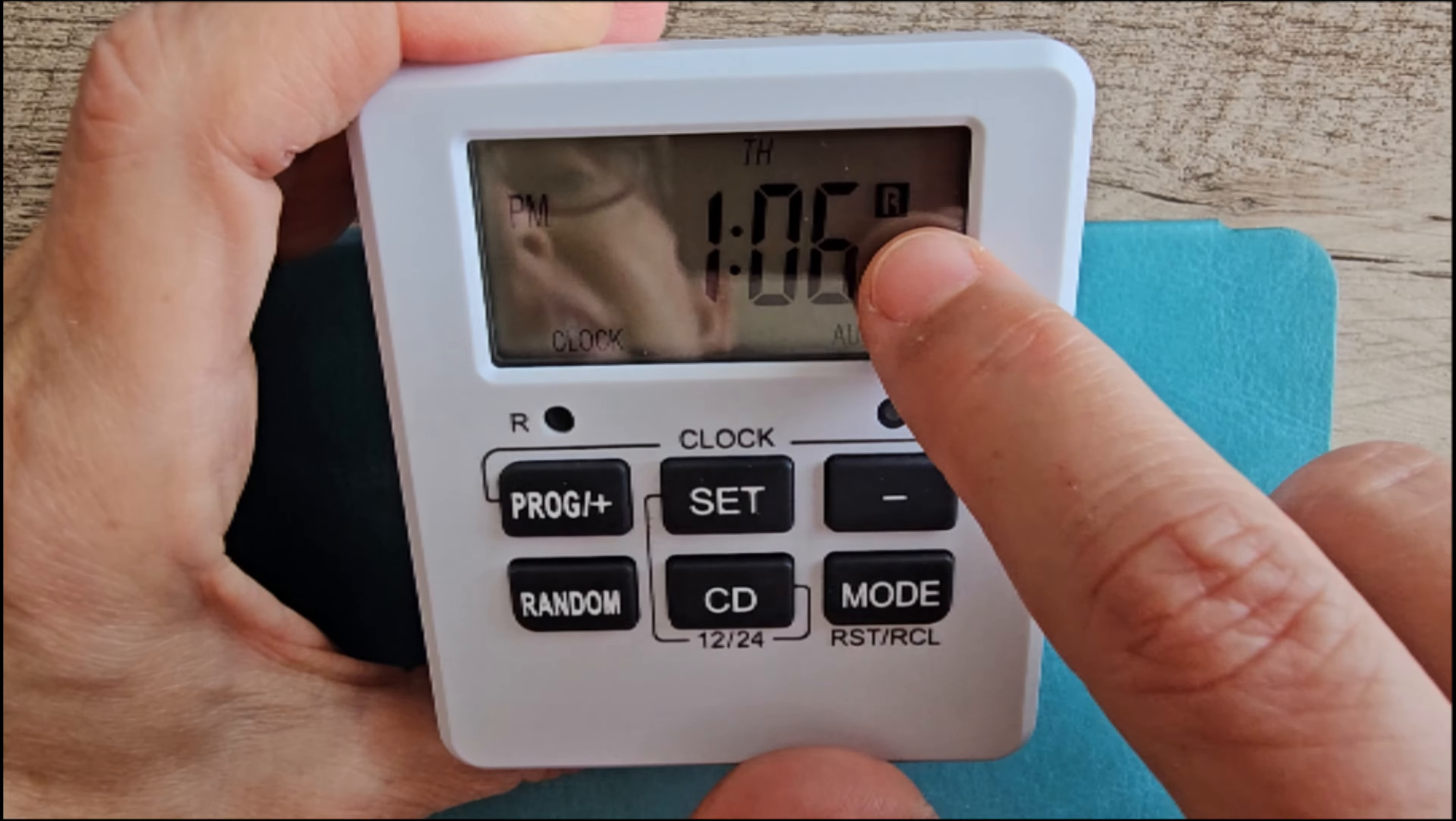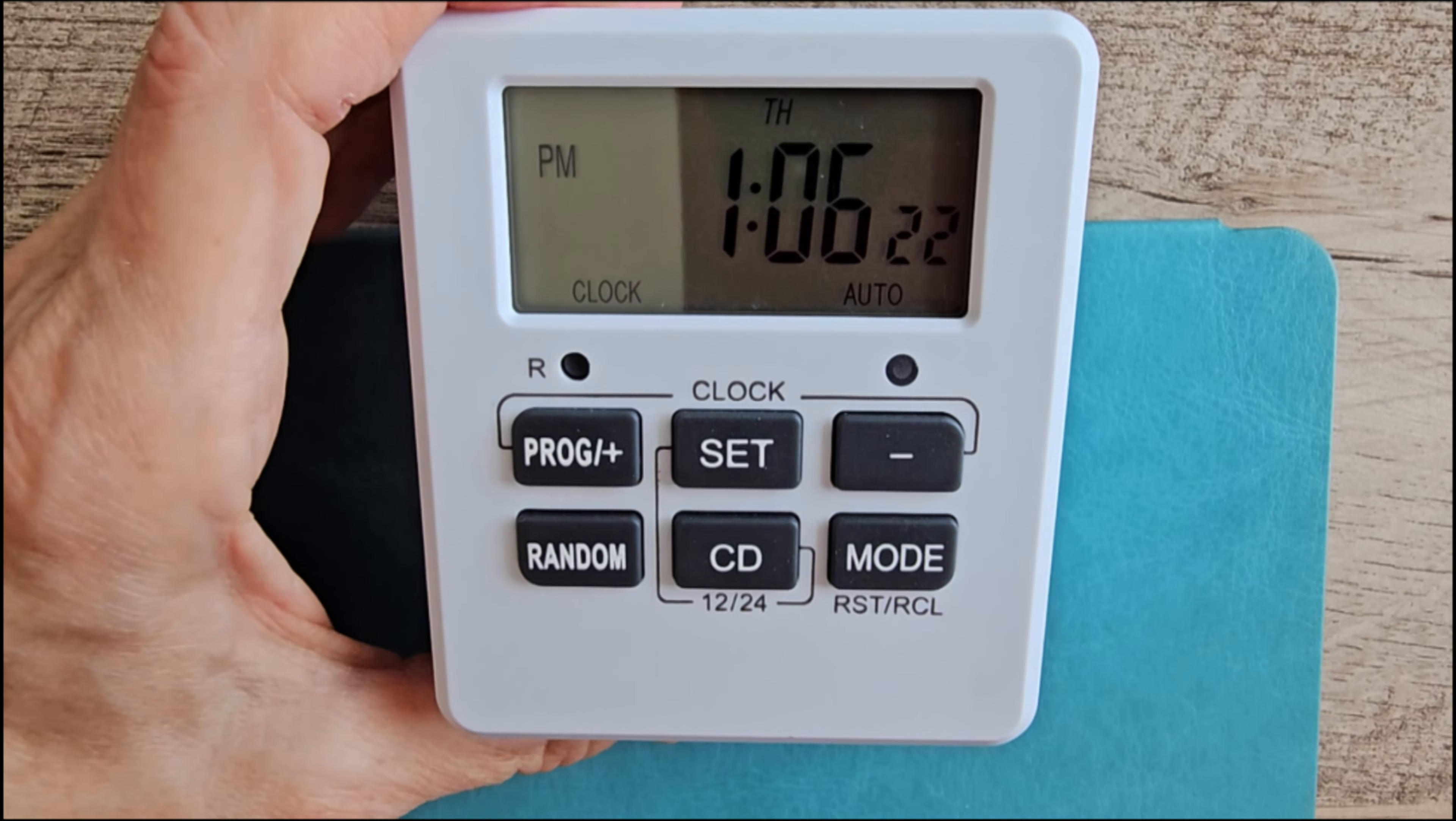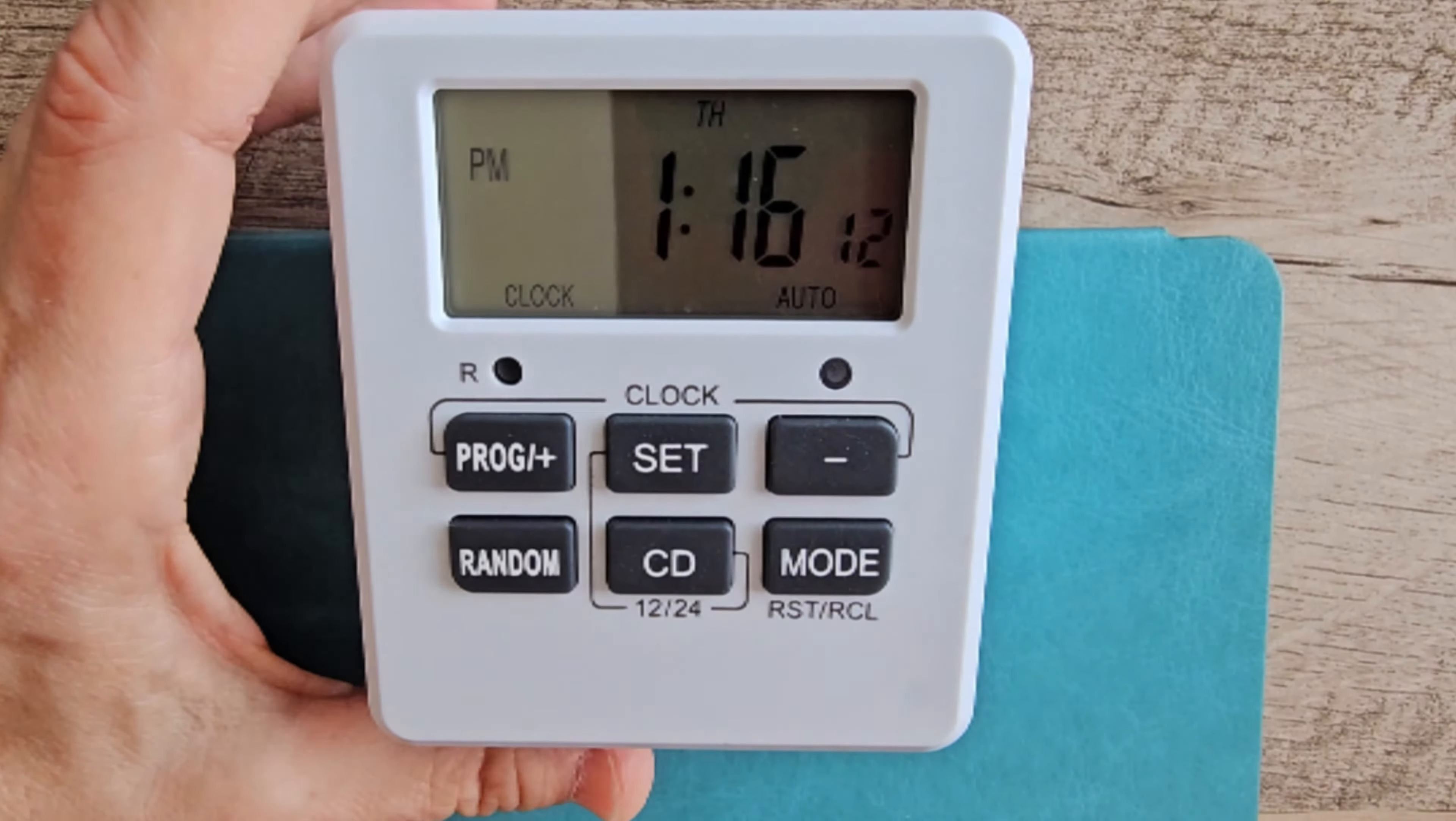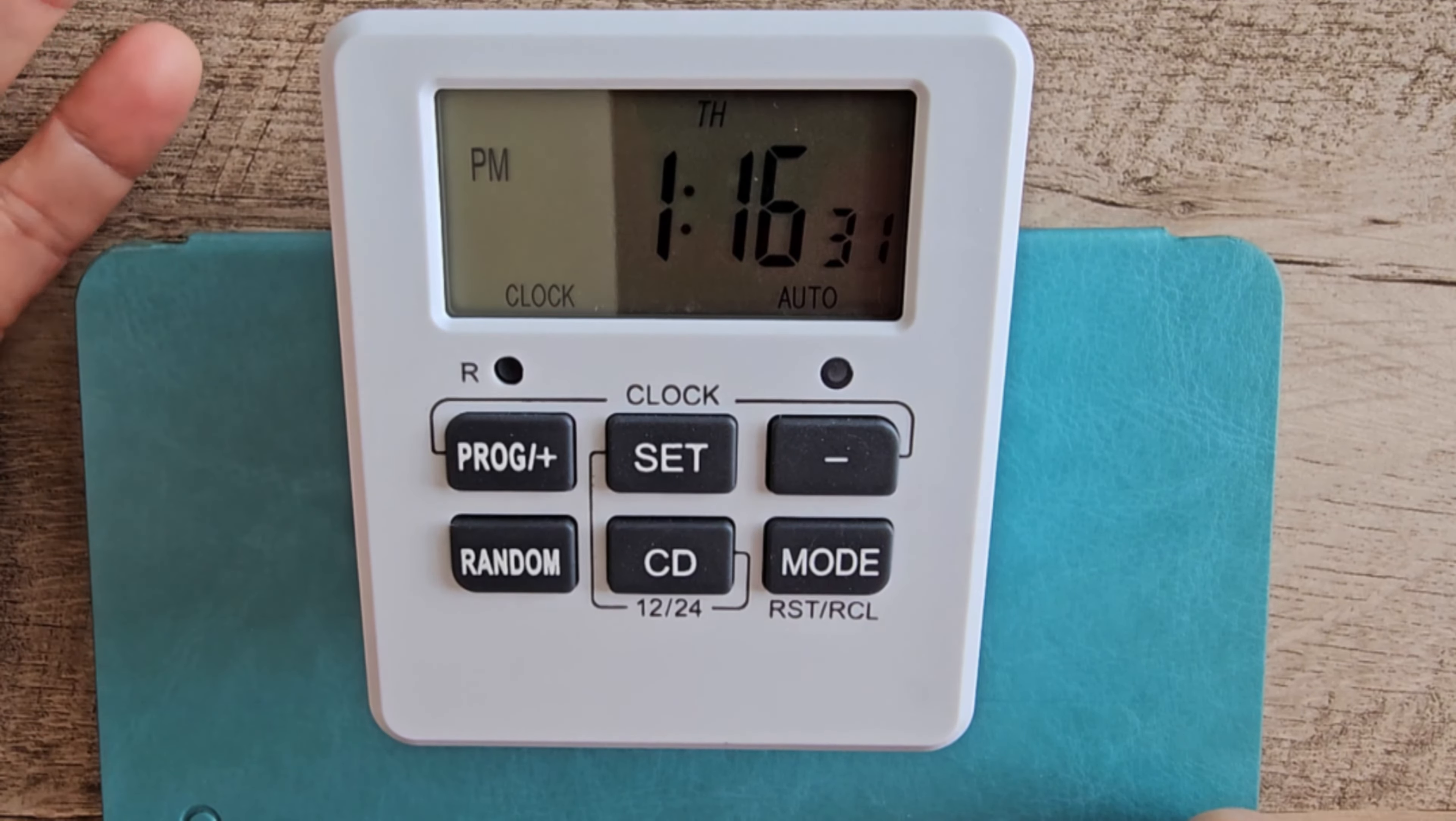It has the random feature, which means it'll just randomly come on for 10 to 31 minutes at night, like from 6 p.m. to 6 a.m. To use the random feature, make sure the mode is set to auto. And then just press random. See, the little R appears there. Press it again to turn it off. So that's good if you're going to be away all night and you want a lamp plugged in to come on and off occasionally.